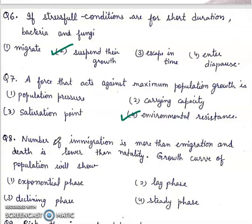Eighth: number of immigration is more than emigration and death is lower than natality. Growth curve of population will show first, exponential growth; second, lag phase; third, declining phase; fourth, steady phase. Right answer will be first, exponential phase.